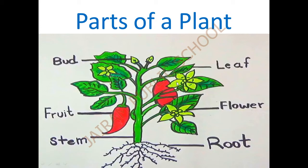Next is the flower. F-L-O-W-E-R, flower. Flower is the most beautiful part of the plant. After this flower we will get the bud, then we will get the fruits. The most beautiful part of a plant is the flower.